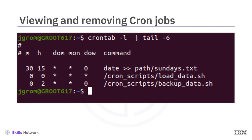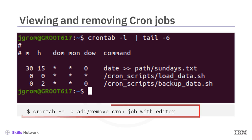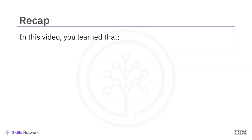Running CronTab with the -l option returns a list of all Cron jobs and their schedules. I used TAIL to avoid returning all of the comments from the CronTab file. To remove a job, simply invoke the CronTab editor, delete the corresponding line in the CronTab file, and save the changes.